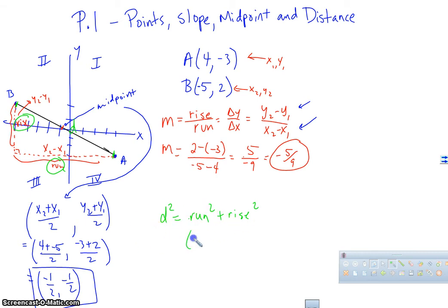Run, we remember, is x2 minus x1 squared. And rise here is y2 minus y1 squared. And that's equal to D squared. And so with this, we get what we call the distance formula. So the square root of x2 minus x1 squared plus y2 minus y1 squared. And that's the distance formula. So the distance formula comes from the Pythagorean theorem.